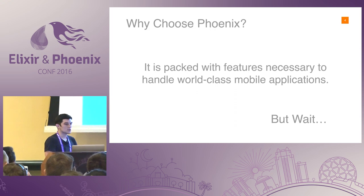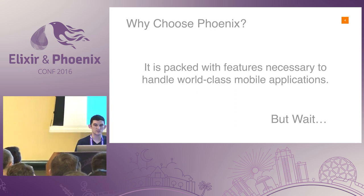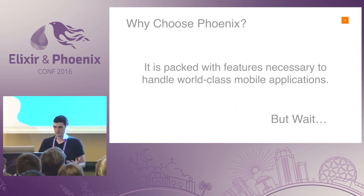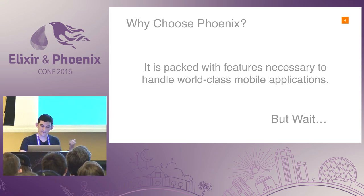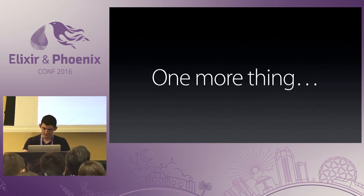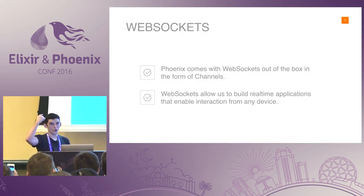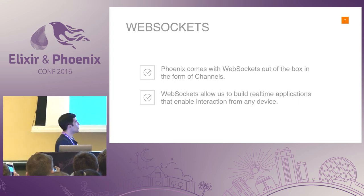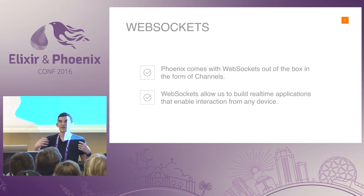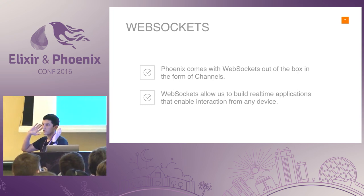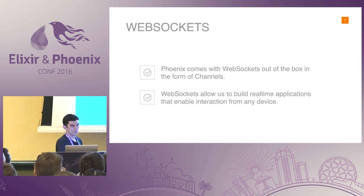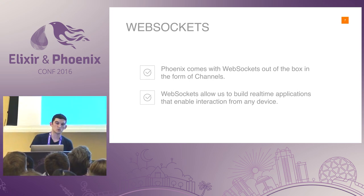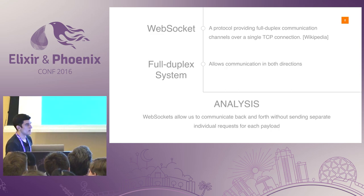You should choose Phoenix because it's packed with all the features necessary to handle world-class mobile apps. And — I apologize in advance, we're talking about Swift which was made by Apple, and I could not resist — but wait, we have one more thing: WebSockets. WebSockets were really the cherry on top of Phoenix for me. If I'm building a JSON API, Phoenix is already a fantastic choice for a mobile backend. And Phoenix comes with WebSockets out of the box in the form of channels, which allow us to build real-time applications that enable interactions from every device.